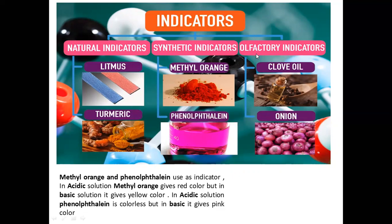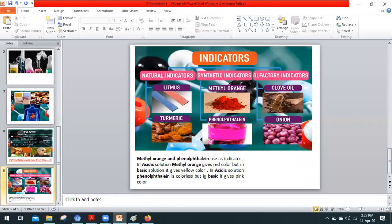The third type is olfactory indicators. You can also use clove oil, onion, and vanilla. These work based on smell. As you mix them with acid or base, you can tell by the change in smell. So olfactory indicators include clove oil, onion, and vanilla.